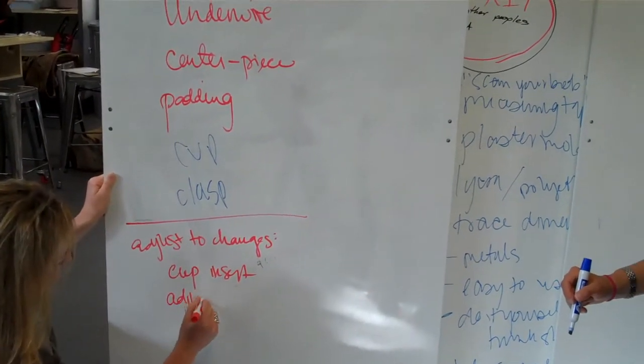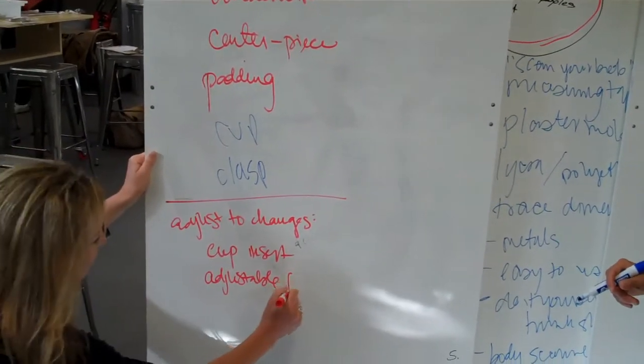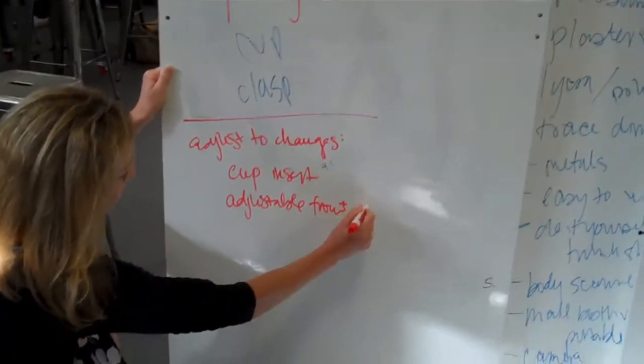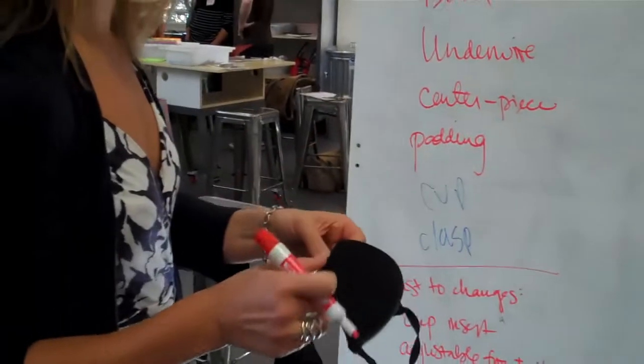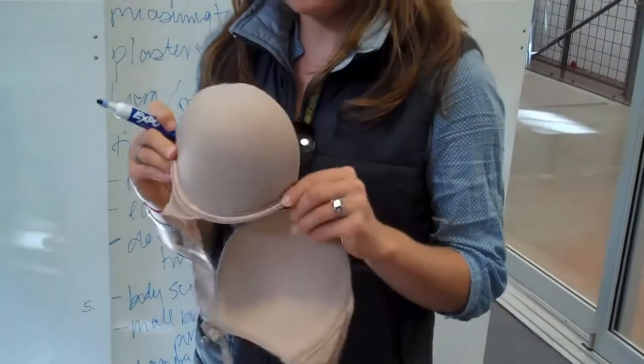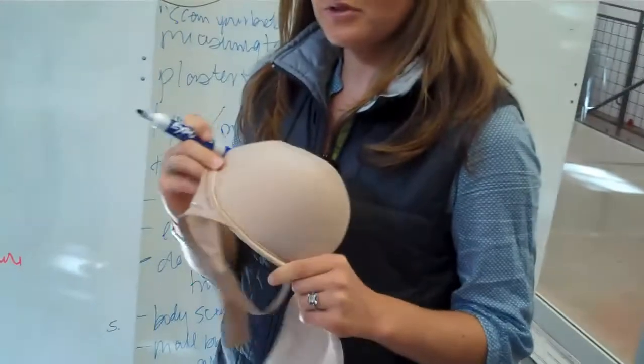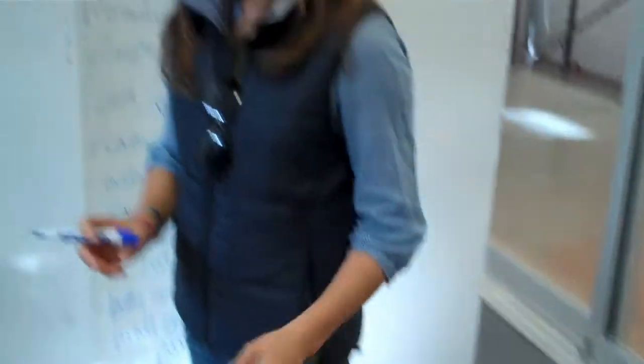So like adjust the underwire. If you adjusted that separate piece. One thing we were talking about is the U shape is very standard. If there's something we could do there, because I mean, you can see like, it could dig into you and it's really uncomfortable.